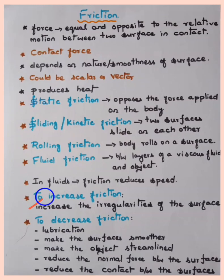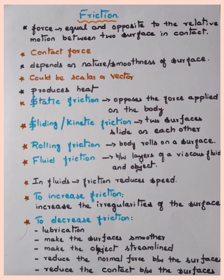To increase friction, we can increase the irregularity of the surface or make the surface rough. To decrease friction, we can apply lubricants. For example, if metallic hinges of a door make noise, we apply oil so that the friction between the hinges reduces and the noise is avoided. By lubricating, you can decrease friction.